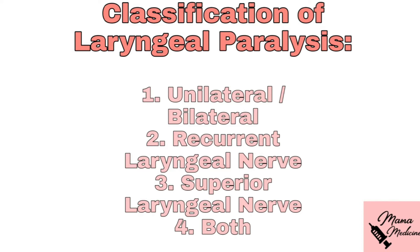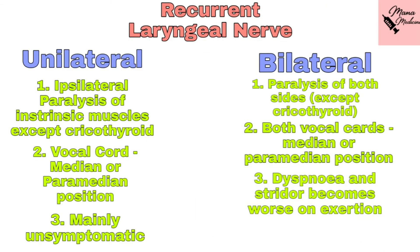If you've already seen the previous video, it should be easy to understand the consequences of paralysis of each nerve. Unilateral paralysis of the recurrent laryngeal nerve — whether right or left — causes ipsilateral paralysis of intrinsic muscles, except the cricothyroid, because the cricothyroid muscle is supplied by the superior laryngeal nerve and is therefore spared.